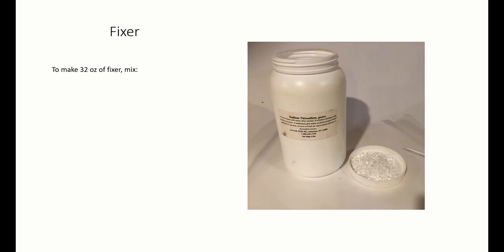The fixer. To make 32 ounces of fixer, start with 1,000 milliliters of distilled water and mix into this 160 grams of hypo, which is sodium thiosulfate.